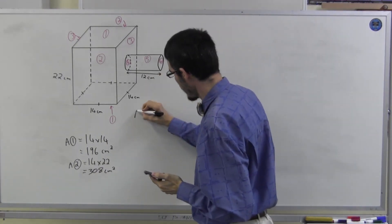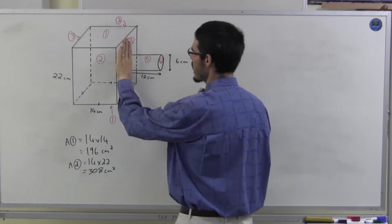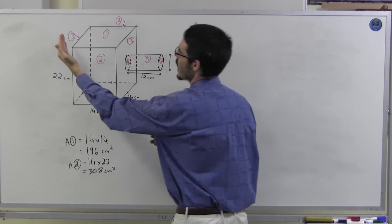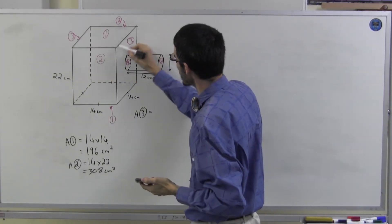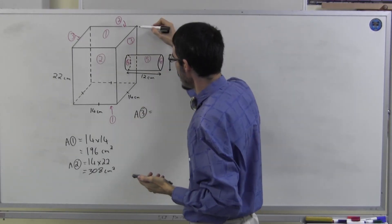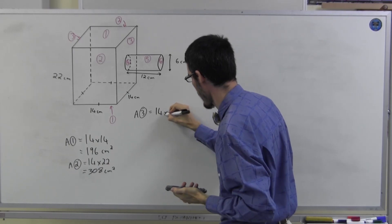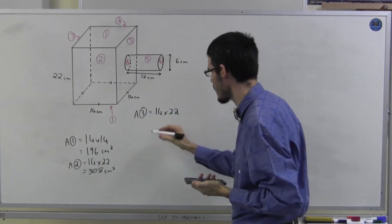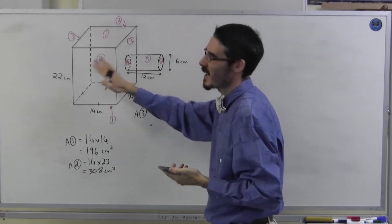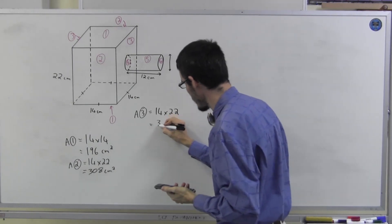And area three. Remember we're doing the rectangle ignoring the circle for the moment. Just the rectangle ignoring the circle. Well that rectangle is going to be 14 by 22. Of course, it's a square, so it's going to be the same as number two. I could have labeled it the same actually if I thought ahead. So it's 308.